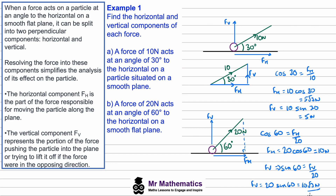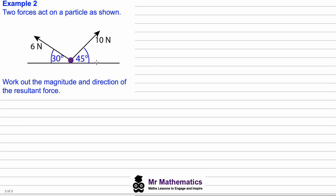In example two, we're told that two forces act on a particle and we've been asked to work out the magnitude and direction of the resultant force. There are lots of ways we can attempt this. We could work out the vertical and horizontal components as we did previously, but I want to show you another way — finding the resultant force directly from the 6 newton and 10 newton forces.